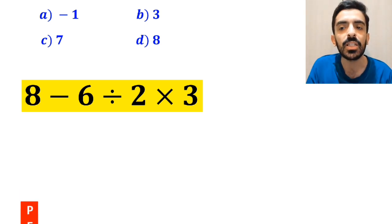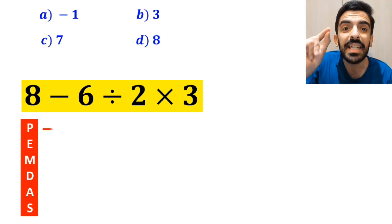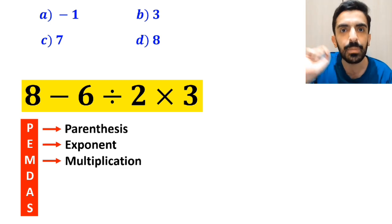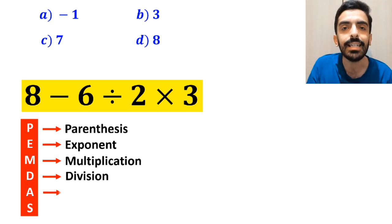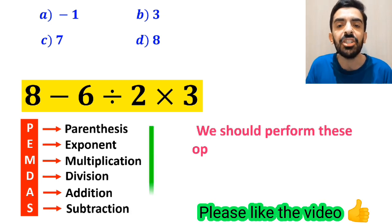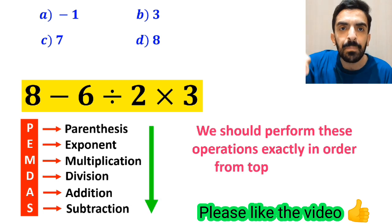To solve this problem, we must follow a rule called PEMDAS. In this rule, P stands for parentheses, E stands for exponent, M stands for multiplication, D stands for division, A stands for addition, and S stands for subtraction. We should perform these operations exactly in order from top to bottom.